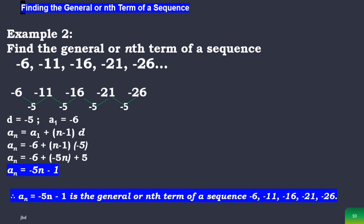Another example: find the general or nth term of the sequence negative 6, negative 11, negative 16, negative 21, negative 26, and so on. We need the common difference and the first term. By computing consecutive differences, the common difference is negative 5. Always remember that the first term is the first value in the given sequence, so the first term is negative 6.